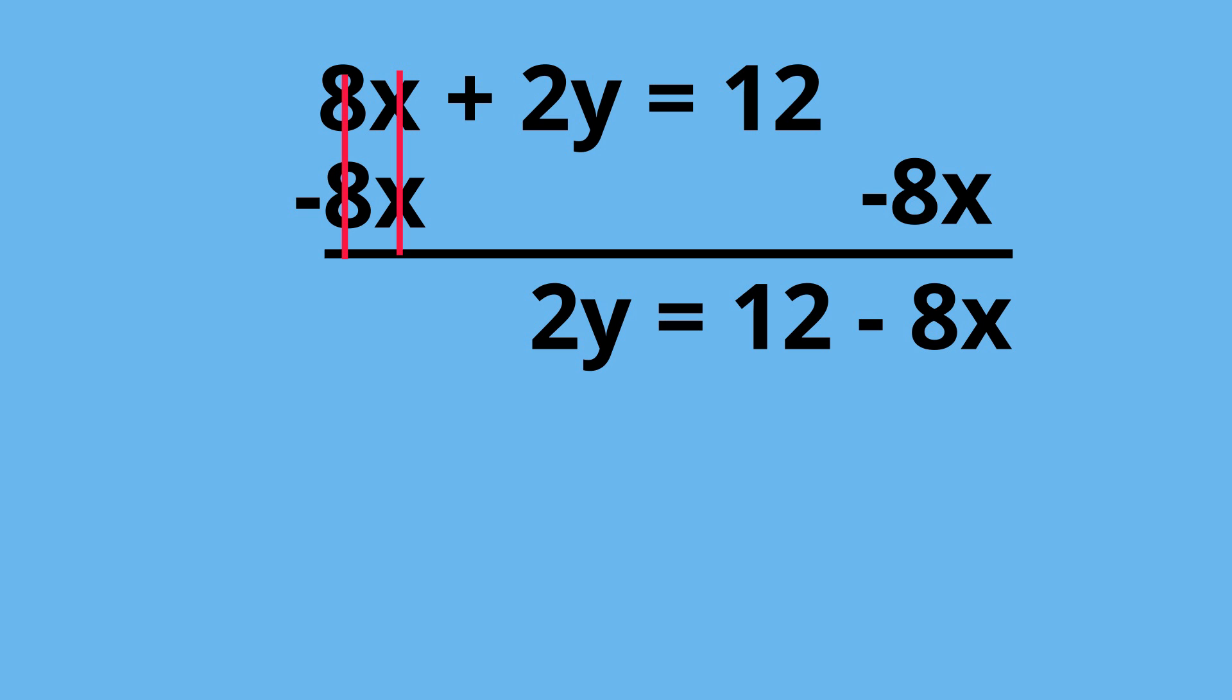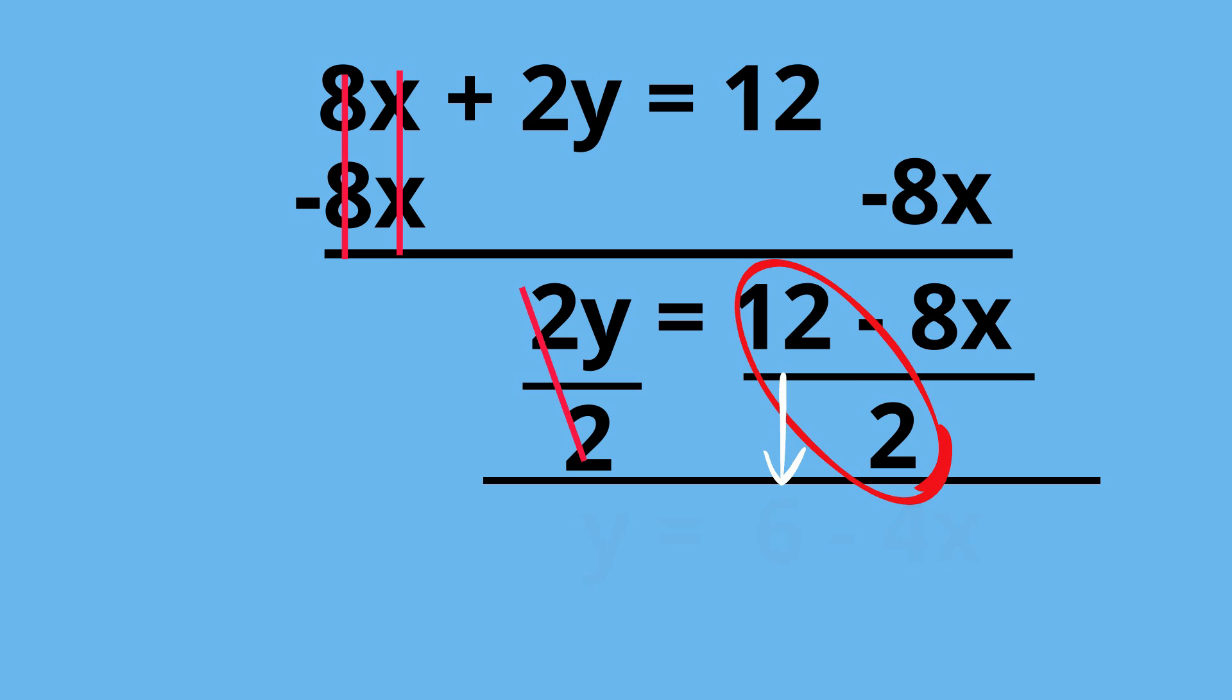Now we need to isolate the Y, and we can divide both sides because 2Y is a multiplication operation. We're going to divide both sides. Notice that we need to divide the 12 and the negative 8X by 2. When we do this, the 2's cancel and you're left with Y equals 6 minus 4X.